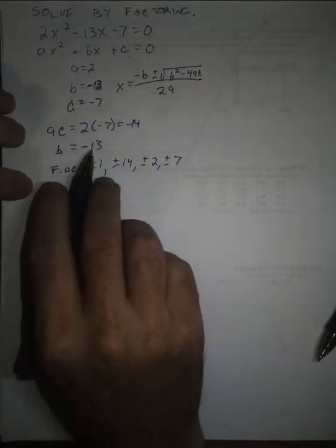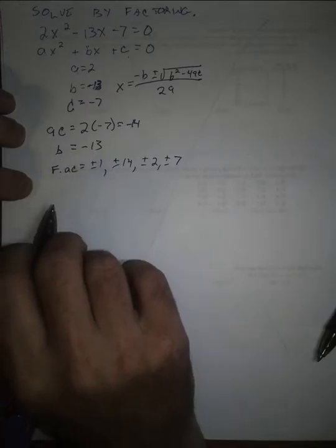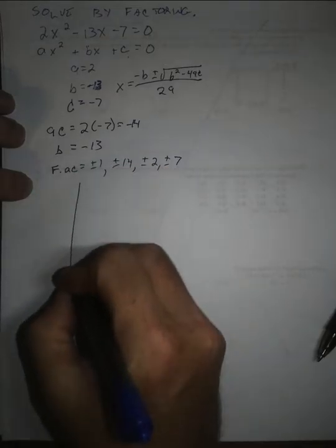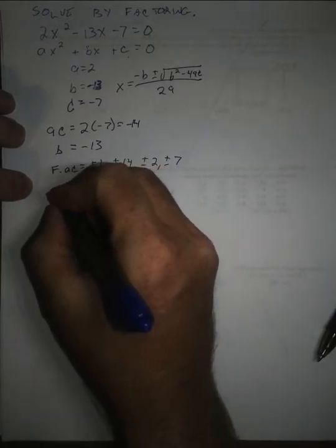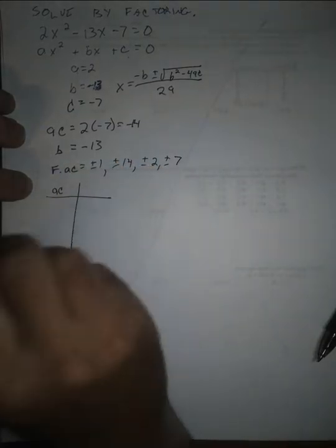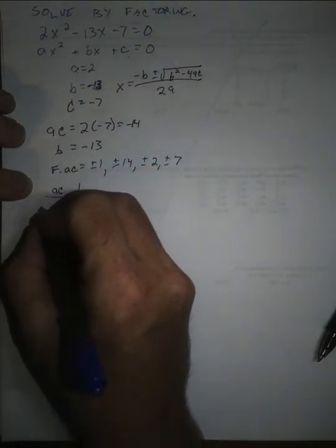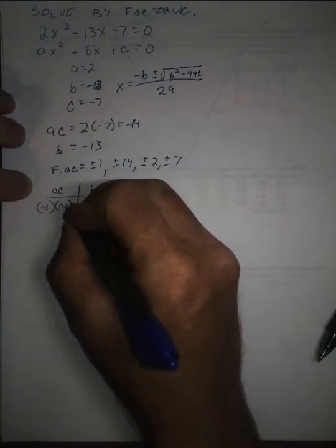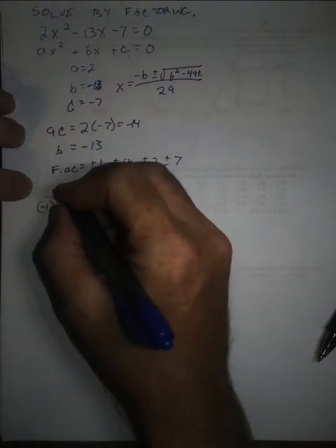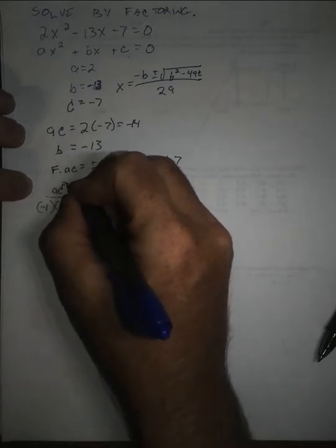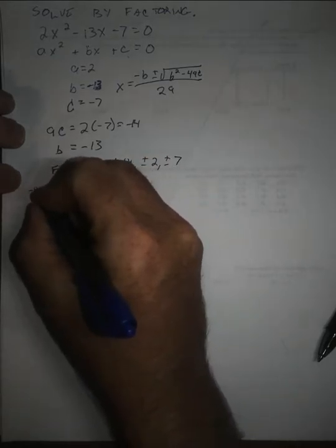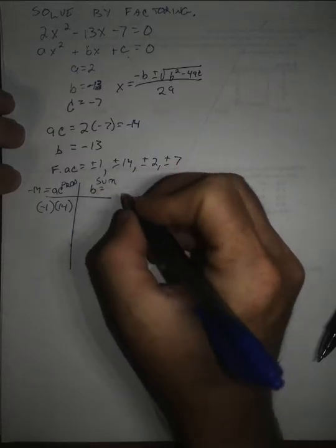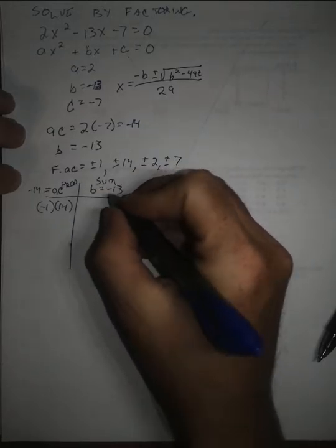And then because we want them to add up to 13, we can do this. We can say ac, and if I said negative 1 and 14, this is the product. The product has to be negative 14, and then the sum has to be negative 13.